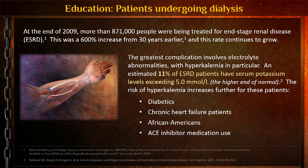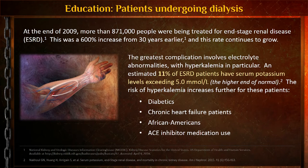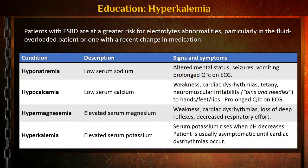Eleven percent of ESRD patients have a serum potassium greater than five — at the very high end of normal. We have to anticipate that. We may see peaked T-waves or other arrhythmia problems. Risk factors for hyperkalemia include diabetes, congestive heart failure, African-American patients, and patients on ACE inhibitor medications at home. Also relevant is hyponatremia — low sodium — which can cause altered mental status, seizures, vomiting, and prolonged QT intervals in end-stage renal patients.